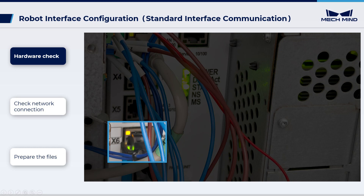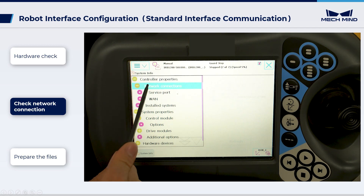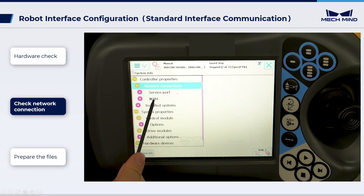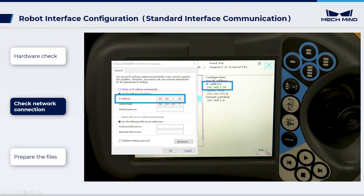Next, check the hardware connections. Make sure the IPC's Ethernet cable is plugged into the X6-WAN port of the robot controller. Follow the steps presented to check IP addresses, and make sure the robot's and IPC's IP addresses belong to the same subnet.